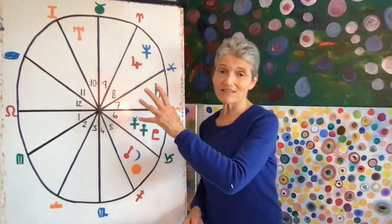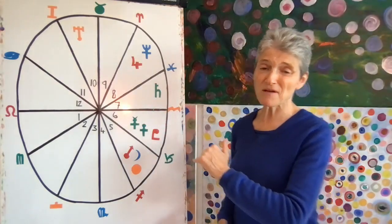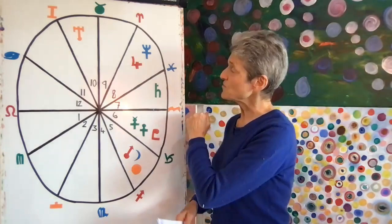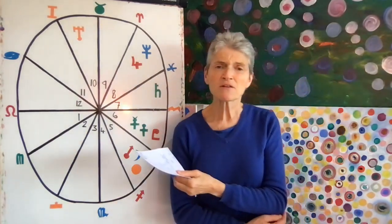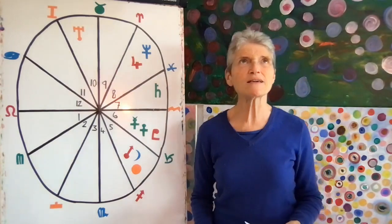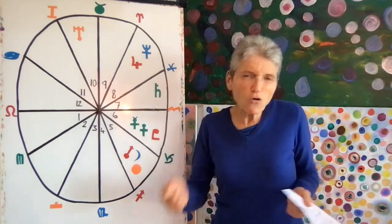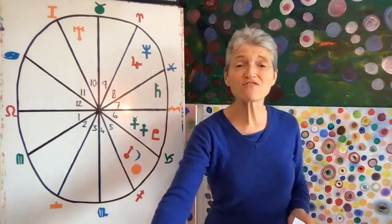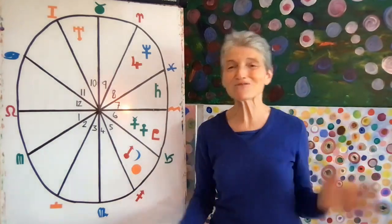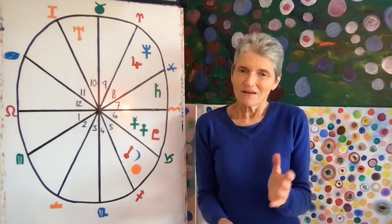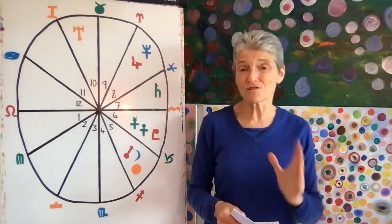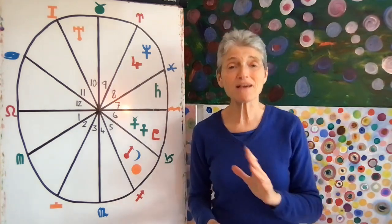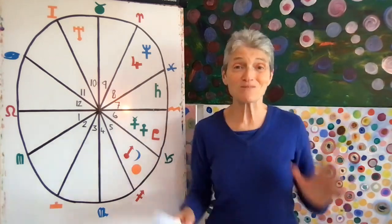Saturn square to Uranus gets really strong this month as an exact hit. It's square for you between your 10th and 7th house. You might find yourself between the old and new way of being in relationships. You want to break out and do things differently, and maybe there are certain structures you have in place or that you think society expects from you that you need to break out of.